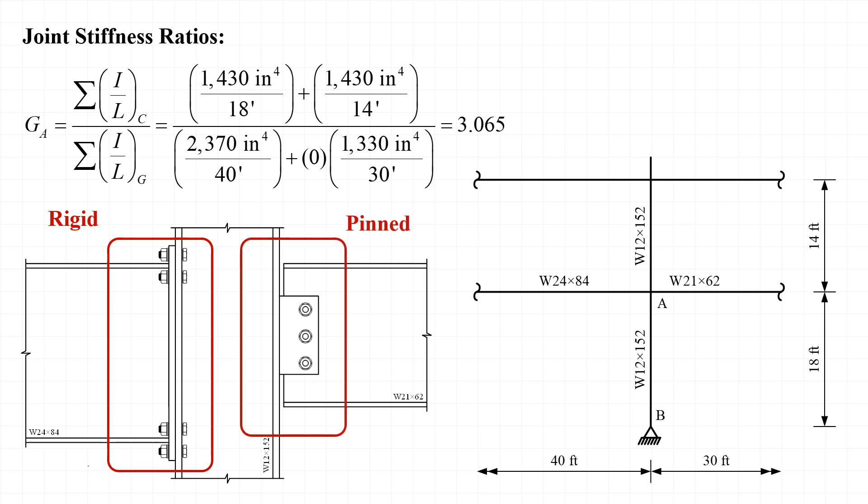Since the flanges of the W21x62 framing in from the right are not connected to the column, we treat that connection as pinned and don't consider the W21x62 stiffness when calculating the joint stiffness ratio. The stiffness ratio for joint A works out to be equal to 3.065.